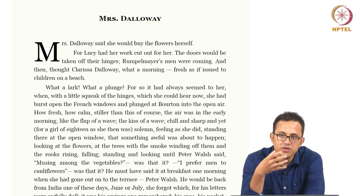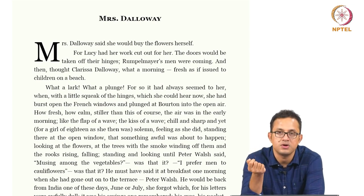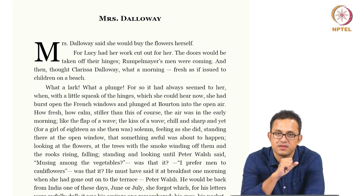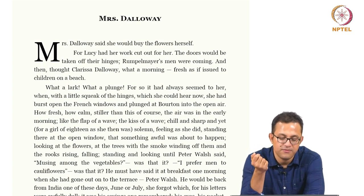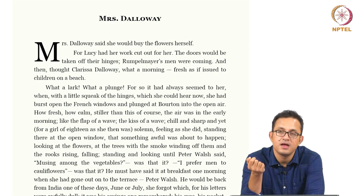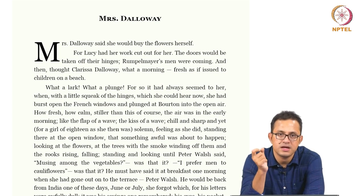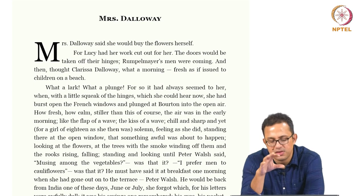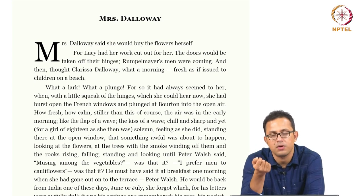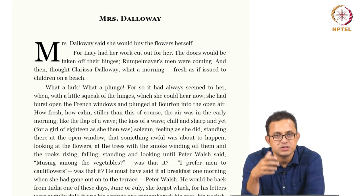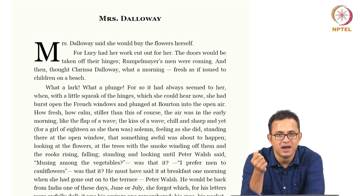Now, like most high modernist works, this novel is set within one day — a 'Joycean day,' as it has become famous, following James Joyce. Even Ulysses is set in just one calendar day. But the calendar day is hardly the most important element here, because what is infinitely more important is the different existential passages of time inhabited by the characters.